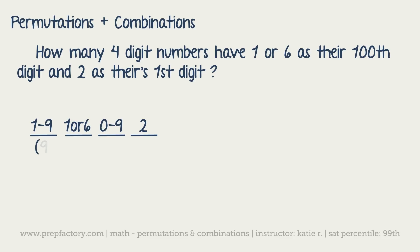Then all you have to do is you count the number of options that's up above and put that in parentheses down below. So one to nine is nine options, one or six is two options, zero through nine is ten options, and just the number two is going to be just one option.